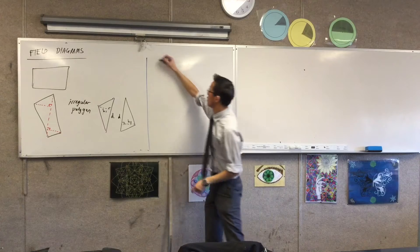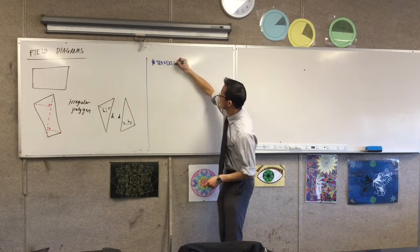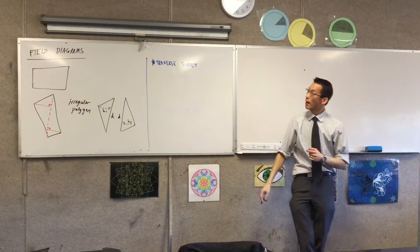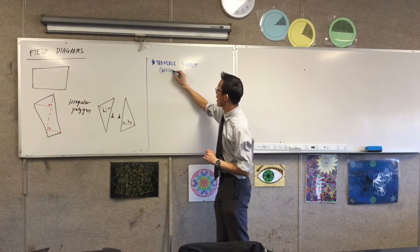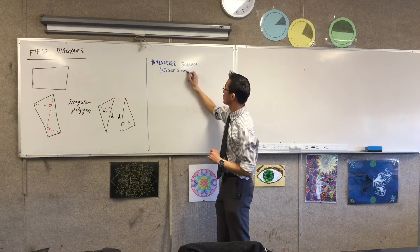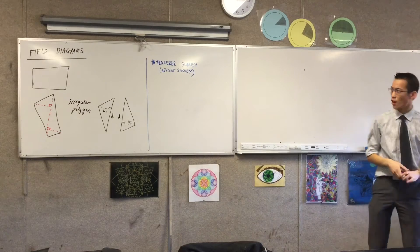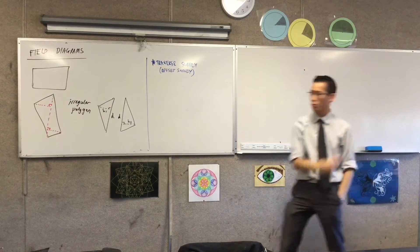Make a little subheading which is traverse survey. This is the name of what we're actually going to go outside and do. Traverse survey, it's also called offset survey. We want to be able to get out there on foot and make a diagram like this and that's what all these trundle wheels are about.